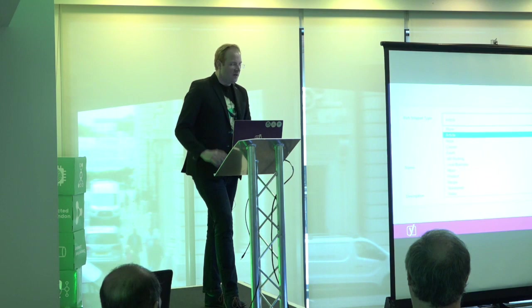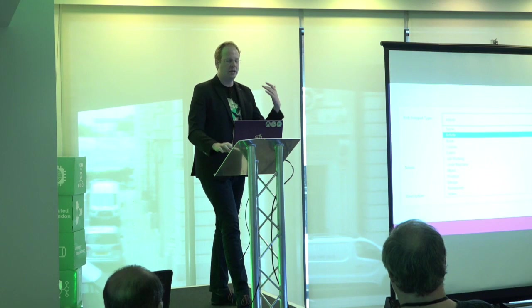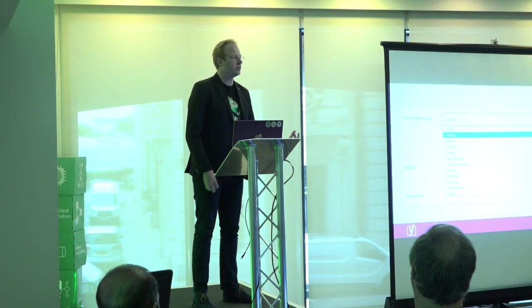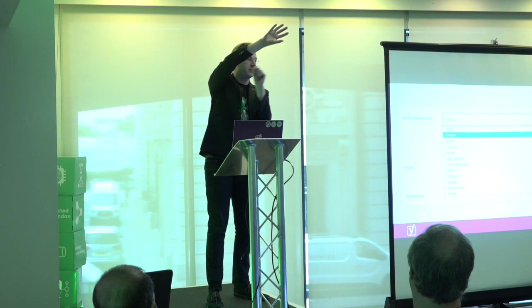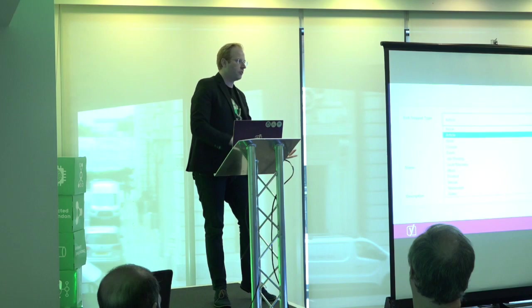A lot of CMS and publishing tools have added support for describing content in structured data. They allow authors to say what a page is about — this is an article, it has an author, a published date, a featured image. But when we look at what Google needs, it's not enough to say 'this page has an article.' I need to say this article is part of a page authored by a person who works for the organization that runs the website.